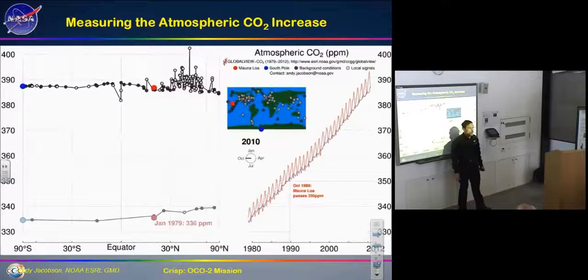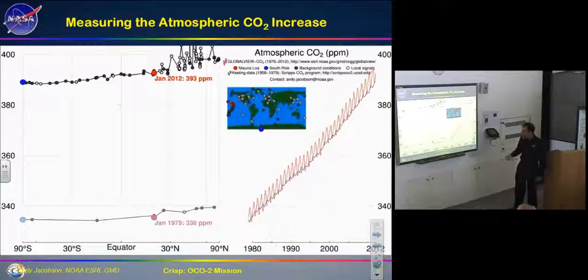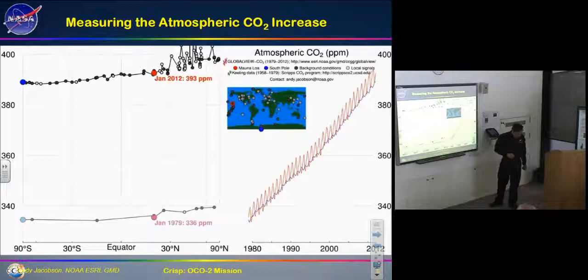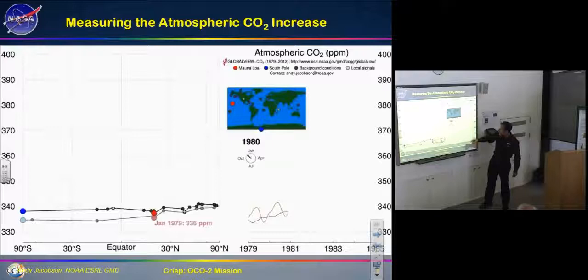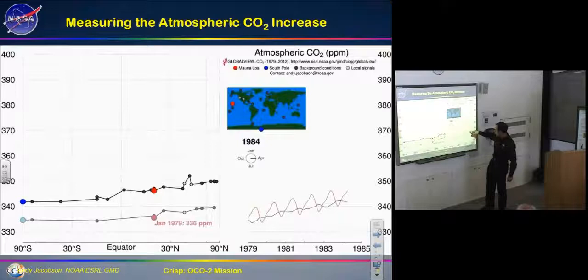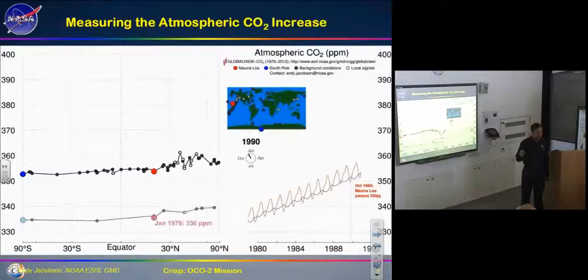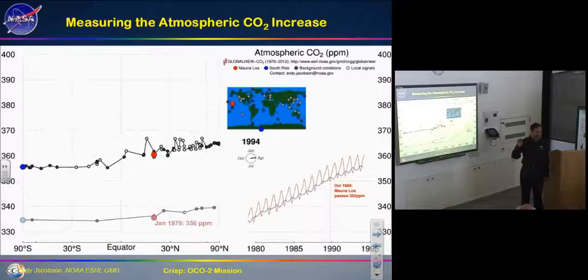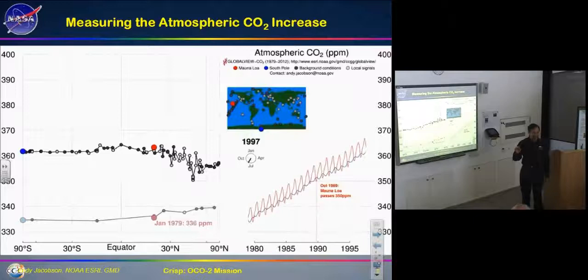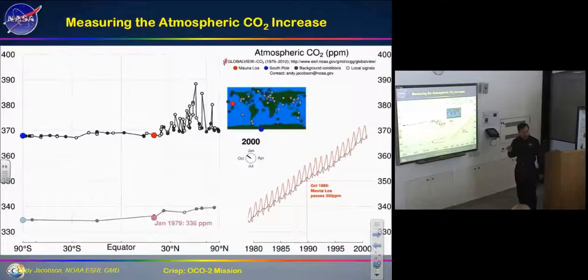In May 2013, Mauna Loa hit 400 parts per million for the first time. CO2 has continued to go up — it hit 400 ppm in May 2013, in March 2014, and in February 2015. It's now quite a bit above 400 ppm — around 408 or 409 — and increasing roughly two parts per million per year.